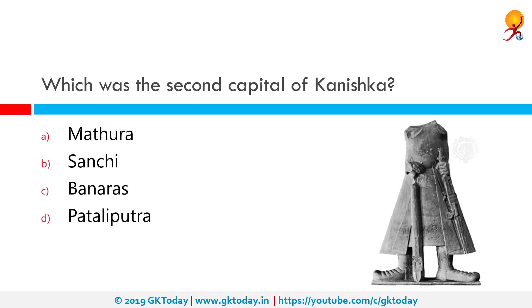Which was the second capital of Kanishka? The correct answer is Mathura. Kanishka's main capital was at Peshawar, then known as Purushapura, with regional capitals at Taxila in Pakistan, Begram in Afghanistan, and Mathura in India. Mathura had the status of almost a second capital.